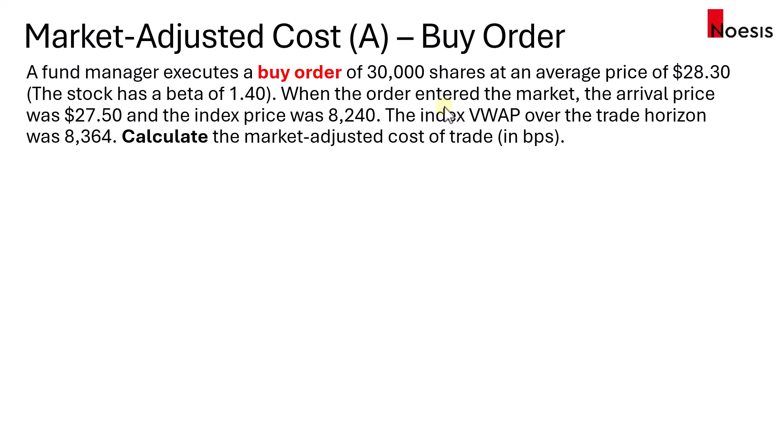In this video, we'll look at the calculation of the market adjusted cost, where we adjust the arrival cost by isolating or removing the effect of the general market movement on the arrival cost. So we have a fund manager who executes a buy order of 30,000 shares at an average price of $28.30, and the stock has a beta of 1.4. When the order entered the market, the arrival price was $27.50, and the index price was $8,240. The index VWAP over the trade horizon was $8,364. Calculate the market adjusted cost of trade in basis points.